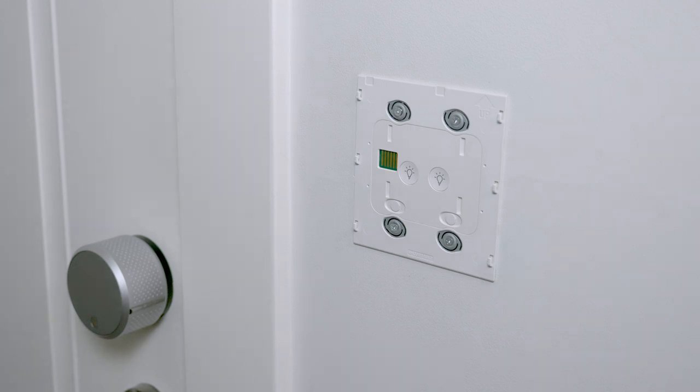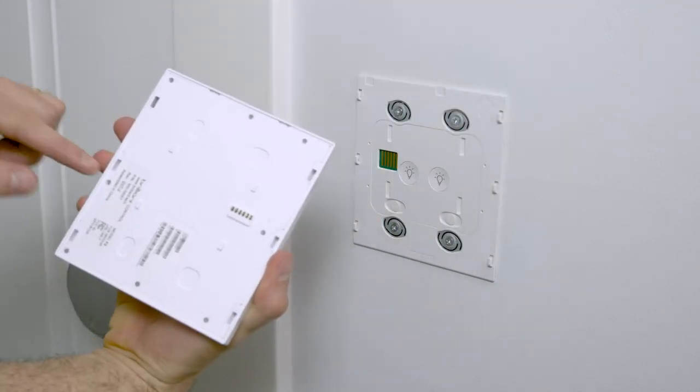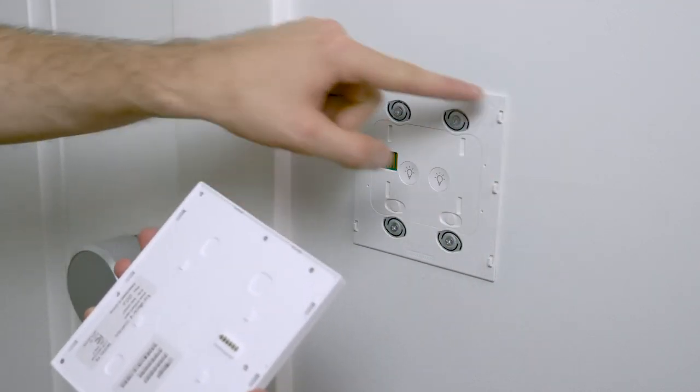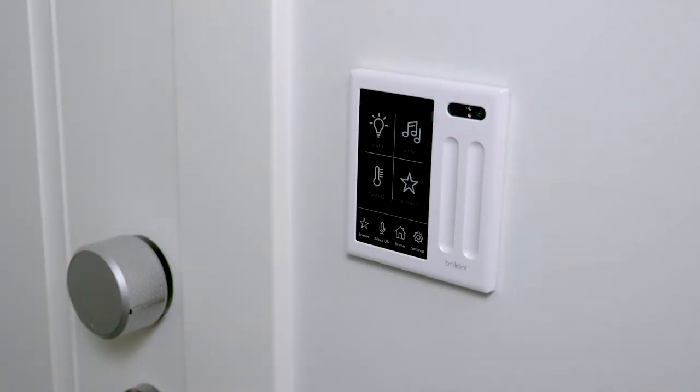The last thing I need to do is attach the face plate to the base in order to get my Brilliant powered on. Align the face plate with the base so that the Brilliant logo is at the bottom and slide down to snap it into place. Ensure the frame is properly secured on all sides.